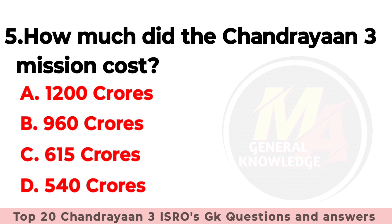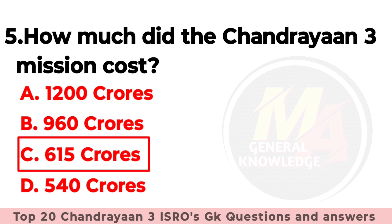Q5: How much did the Chandrayaan-3 mission cost? The right option is option number C — 615 crores.